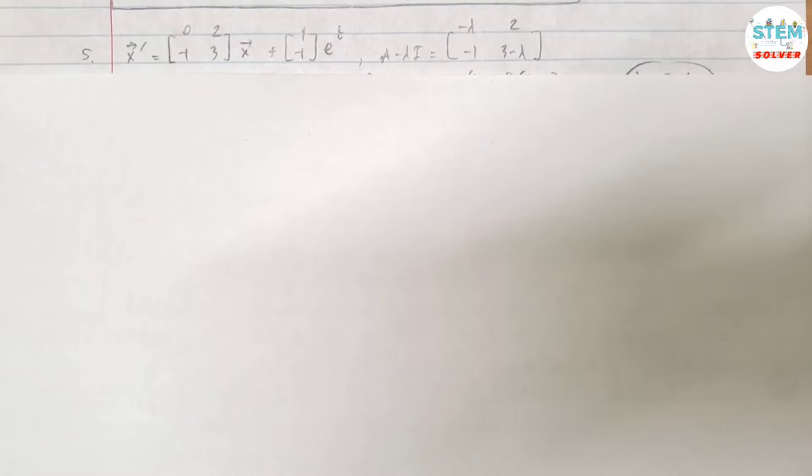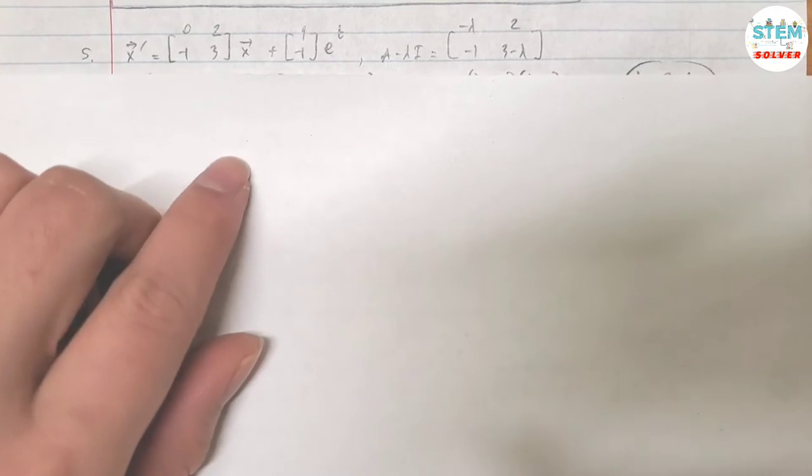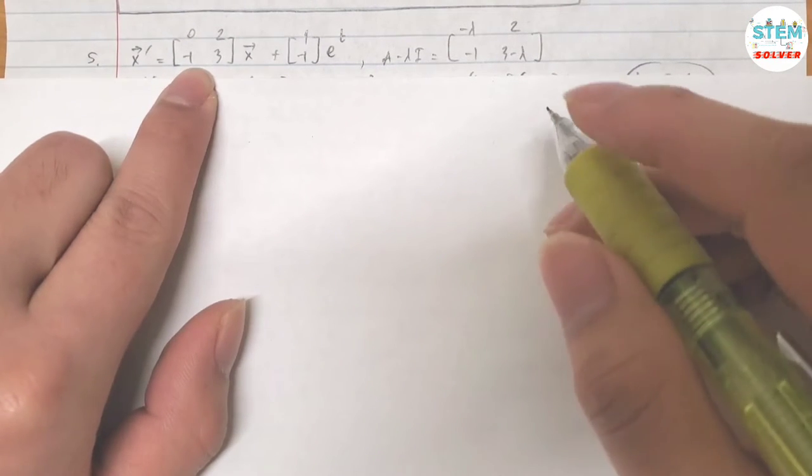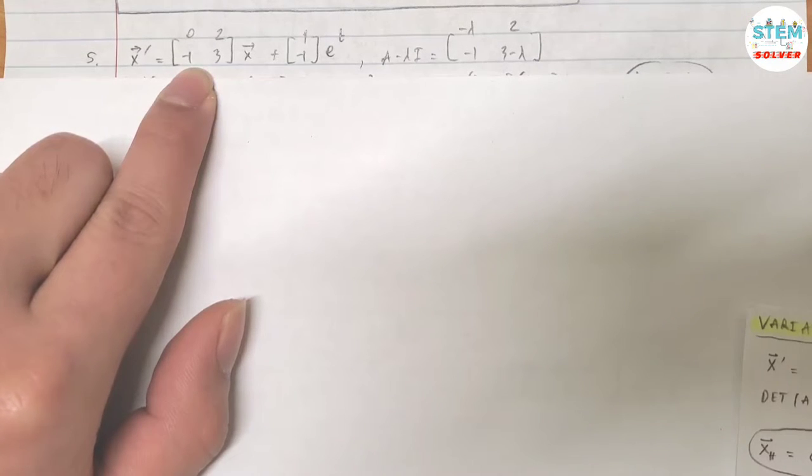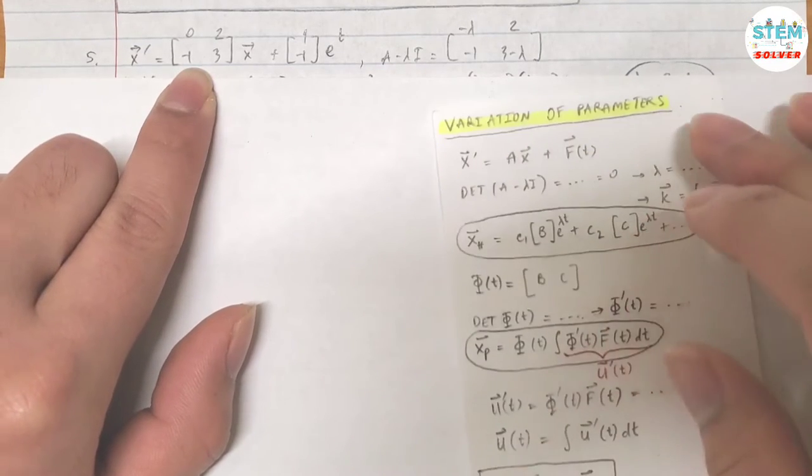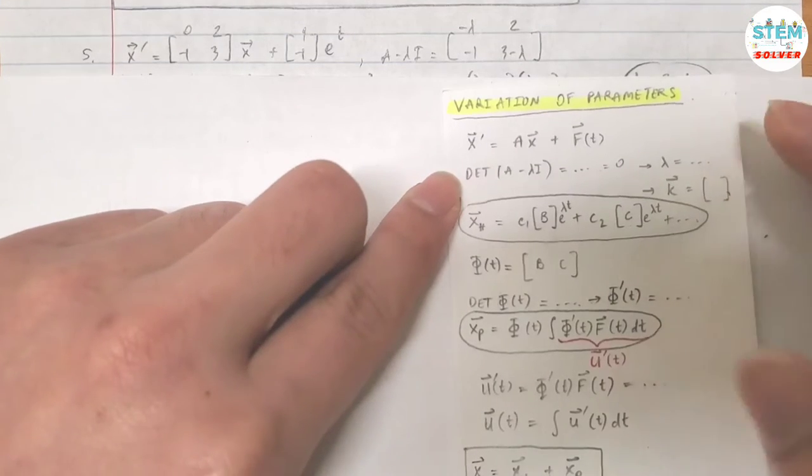Use Variation of Parameters to solve the given system. So you are given this system and you are asked to find a solution using Variation of Parameters. Here's a guideline to solve this.